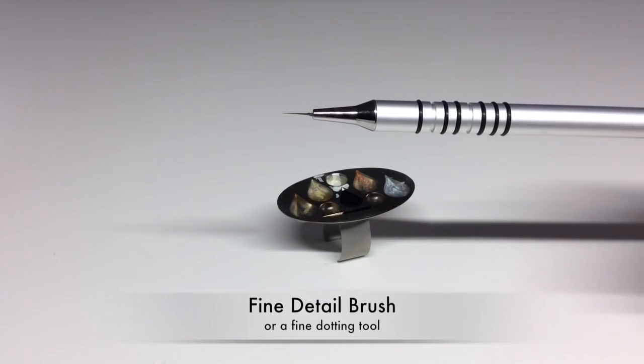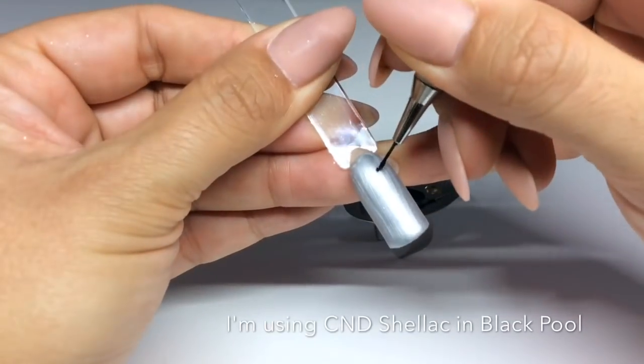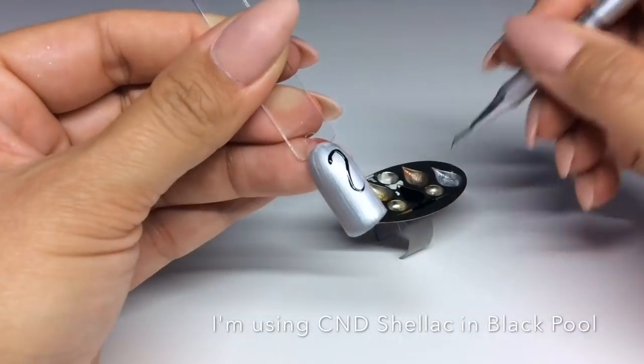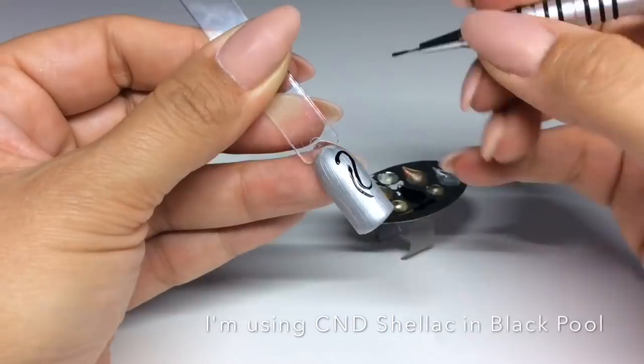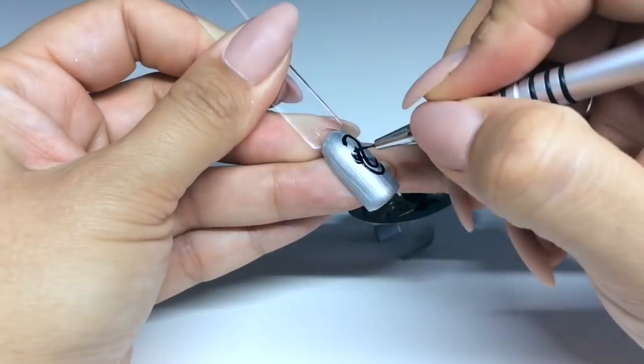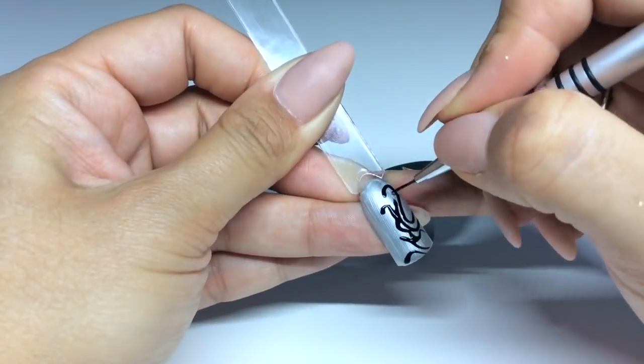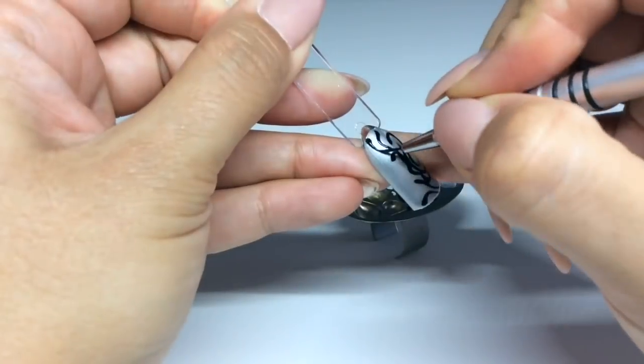For your embossed design you'll be needing a fine detail brush or a dotting tool. I'm just literally going to draw an embossed design, totally making it up as I go along. Then I'm going to cure this in my lamp and then repeat a further two or three times just to get the raised look.